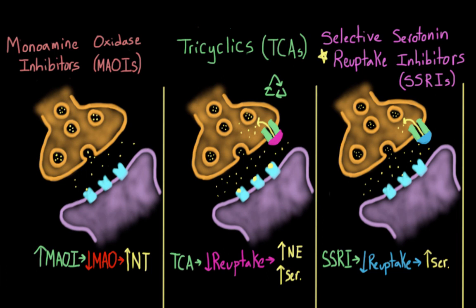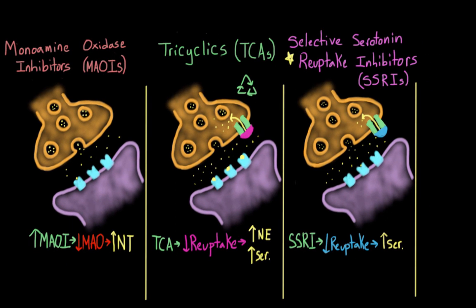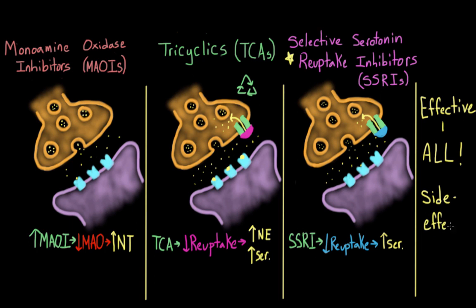We have three classes of antidepressants, and a question you might have is: how do doctors know which one to prescribe? Your natural answer might be that they should prescribe the one that works best. But it turns out that all of these medications are equally effective as antidepressants. So if we can't differentiate by effectiveness, maybe we can differentiate by side effects — and this is where the main differences lie.